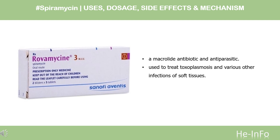Spiromycin is a macrolide antibiotic and antiparasitic. It is used to treat toxoplasmosis and various other infections of soft tissues. Spiromycin has been used in Europe since the year 2000 under the tradename Rovamycin, produced by Rhone-Poulenc Rohrer, Sanofi and Farmitalia France, and Eczacibasi Ilac, Turkey. It also goes under the name Rovamycin in Canada, distributed by Odin Laboratories, where it is mostly marketed to dentists for mouth infections.